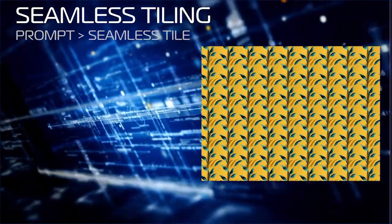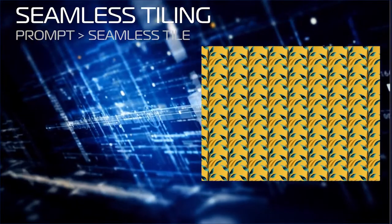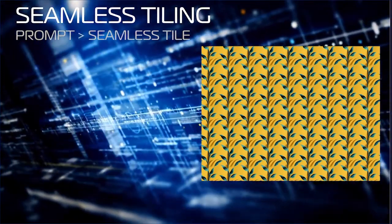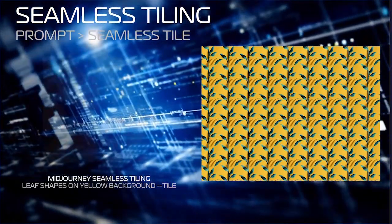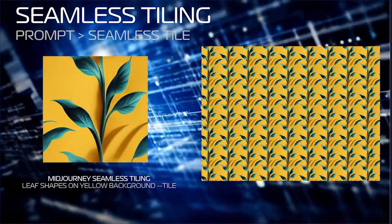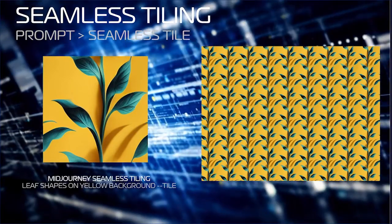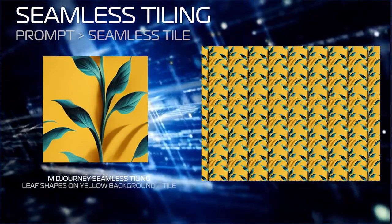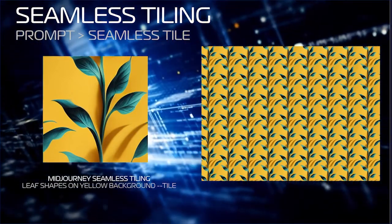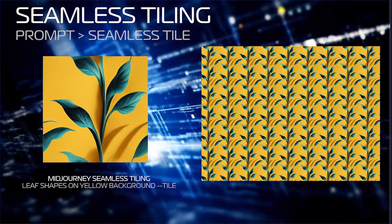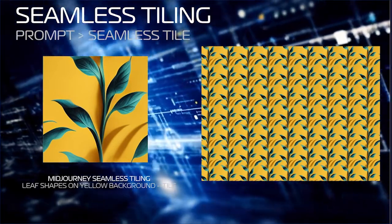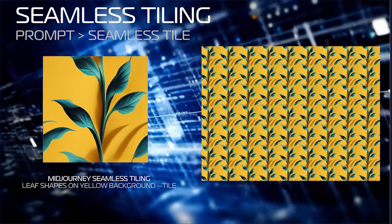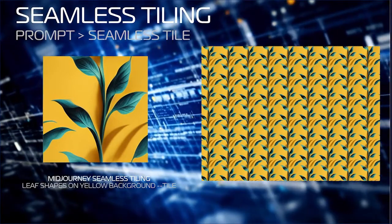There are other aspects to AI image generation to explore. Recently added to most platforms is the ability to create seamlessly tiled images. For example, this is a leaf shape on a yellow background — I added the tile prompt to MidJourney and created this pattern. Taking the resulting pattern into Photoshop, I used it to fill the entire screen.